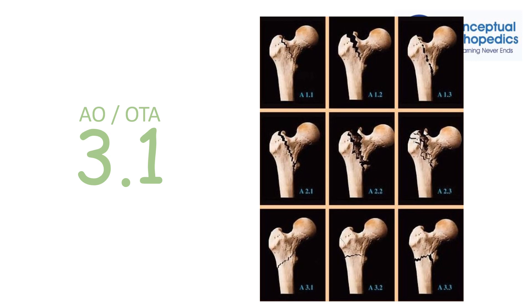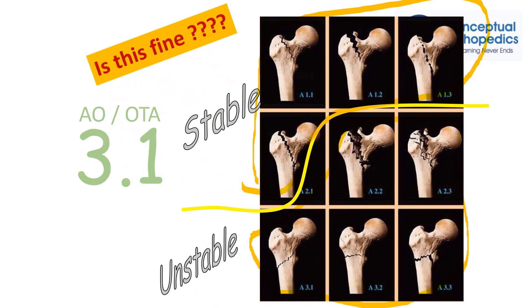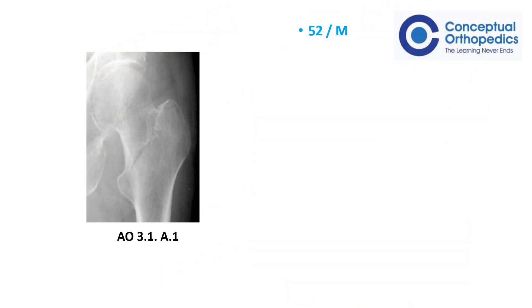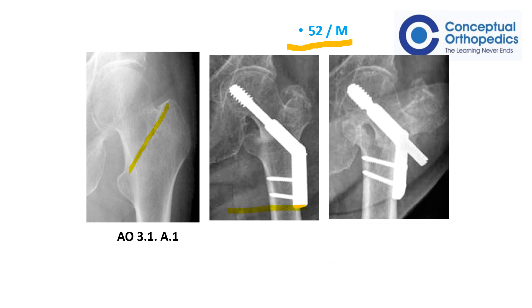Looking at the AO classification, four injury patterns are considered stable whereas four to five are considered unstable. But is this true in current-day orthopedics? For example, here we have a simple intertrochanteric fracture — a 31-A1 fracture in a 52-year-old individual — in whom a DHS plate was done with good reduction and fixation, but this went on to failure in three months. If 31-A1 is a stable fracture and DHS should have been the implant of choice, why did it fail?